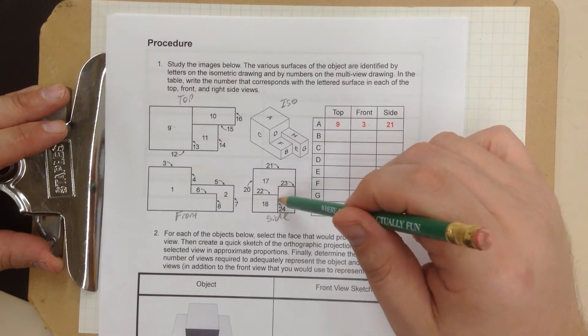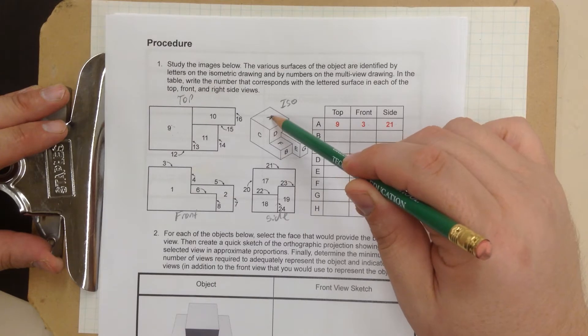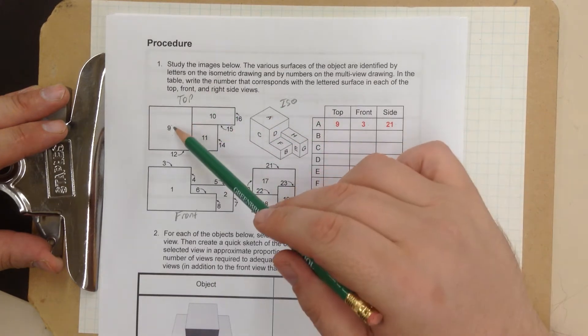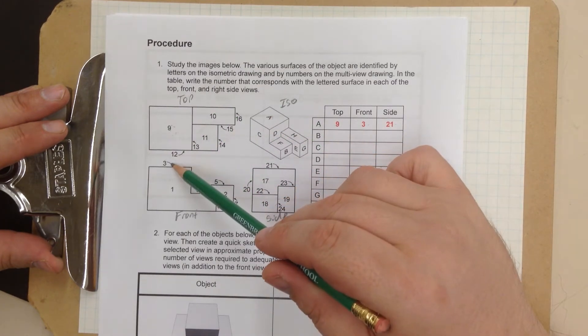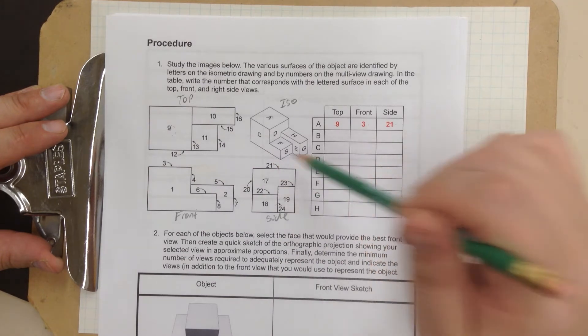Now let's look at the side view, which is this one. And you can see number 21 is pointing to the top. So, that is A. In this view, it's number 9. In this view, it's number 3. In this view, it's number 21. They're all referring to the same piece.